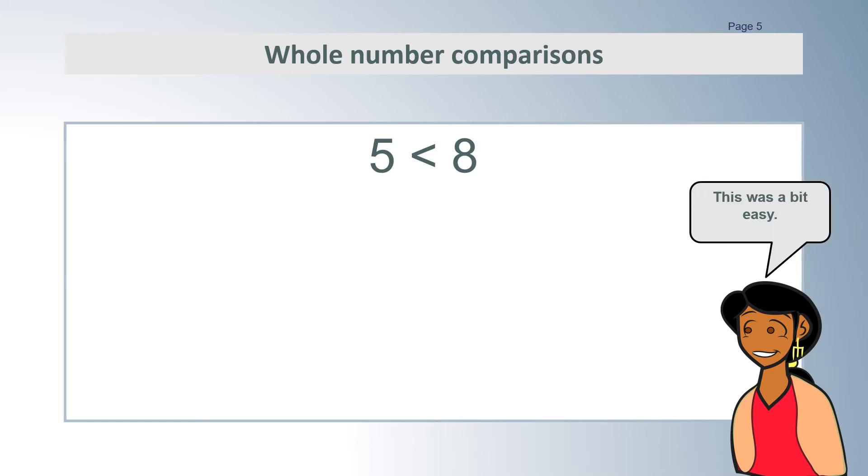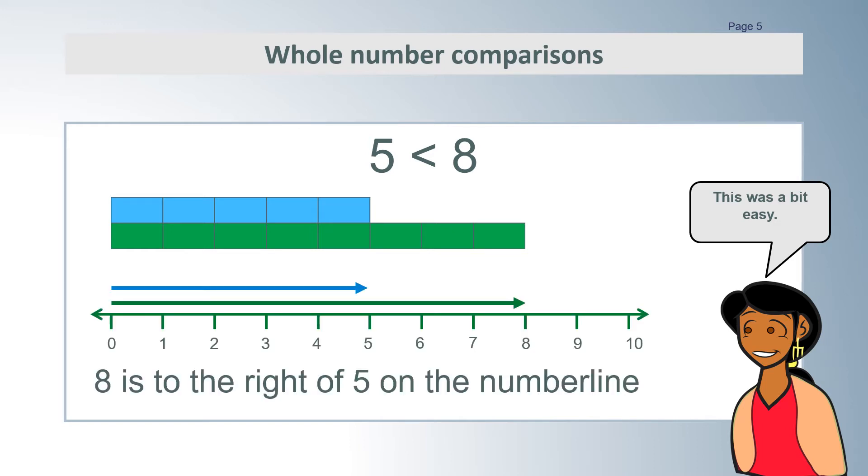We can compare numbers of objects, in this case rectangles. We can line them up and see which is longer. The green 8 is longer than the blue 5 bar. Or we can use a number line. Convention says that we count from left to right, so we can see that 8 is to the right of 5 and is thus greater.